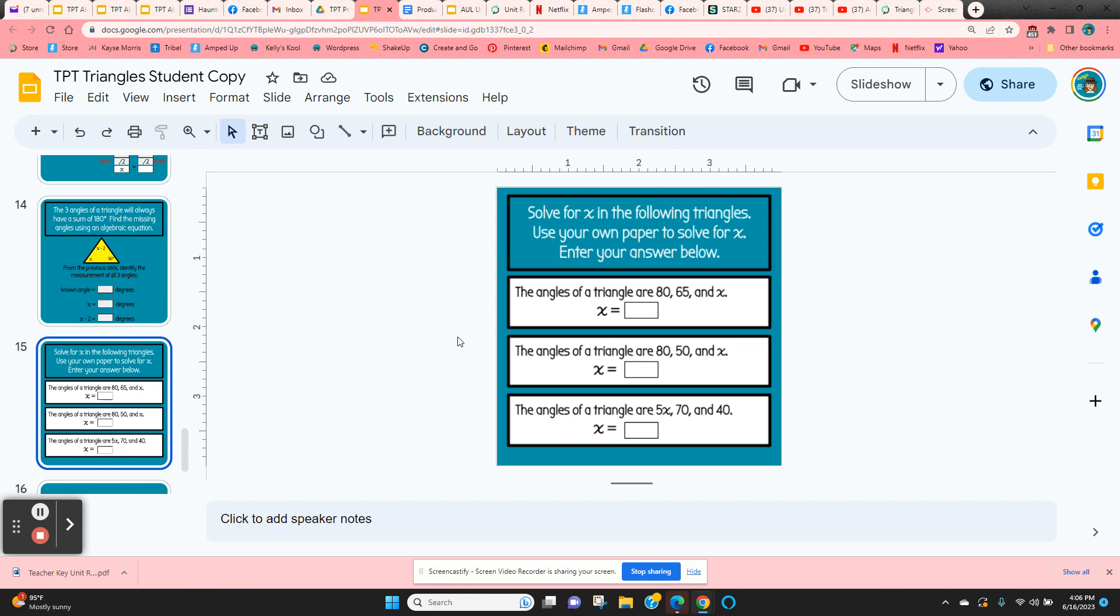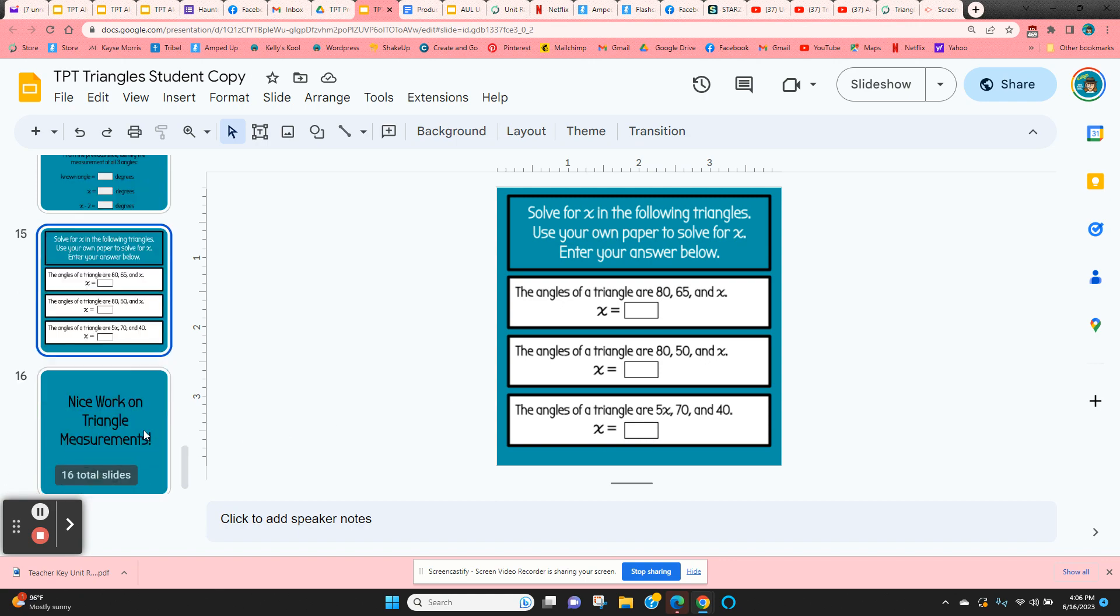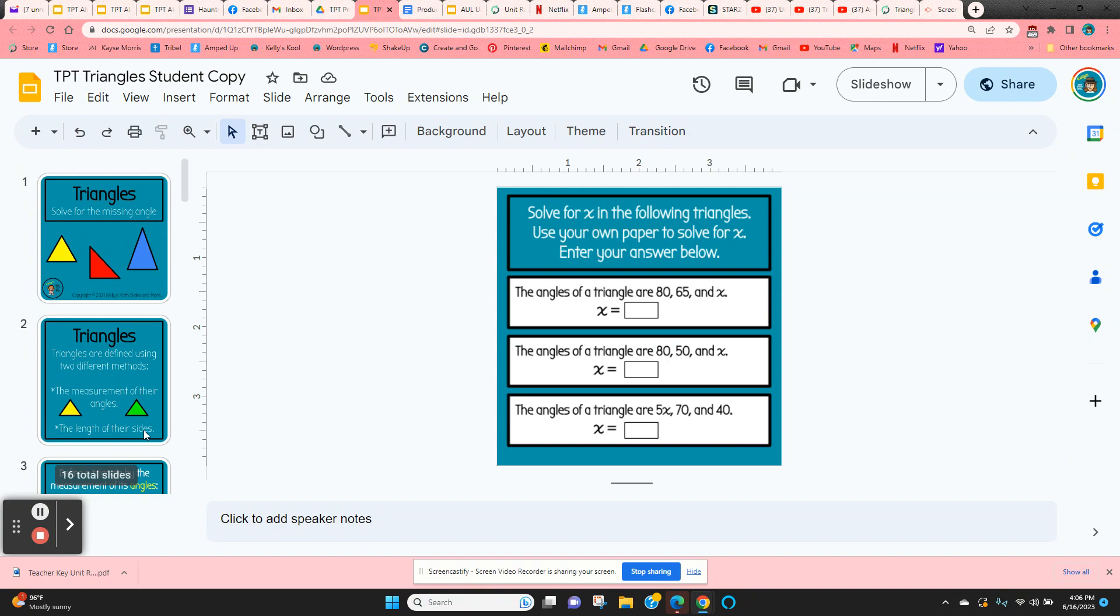When they get to the last slide, they're going to be given the angles of a triangle: 80, 65 and x, and they have to figure out the missing angle. The last one's a little bit more difficult. It has a 5x. So when they figure out what x is, then they'd have to multiply by 5. So that is a digital lesson on triangles finding the missing angle.